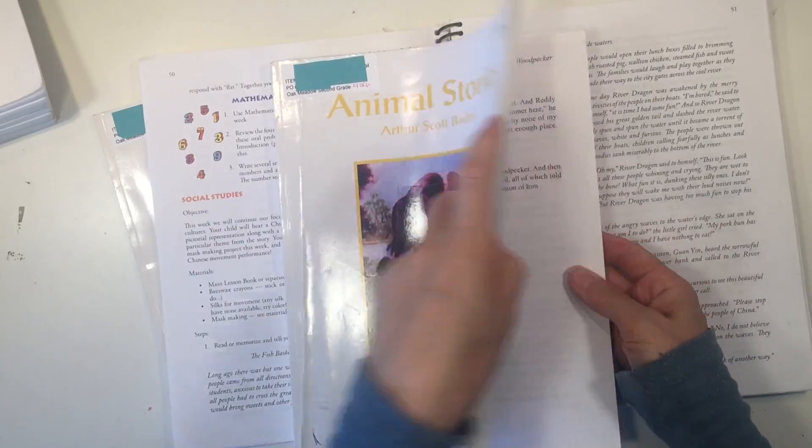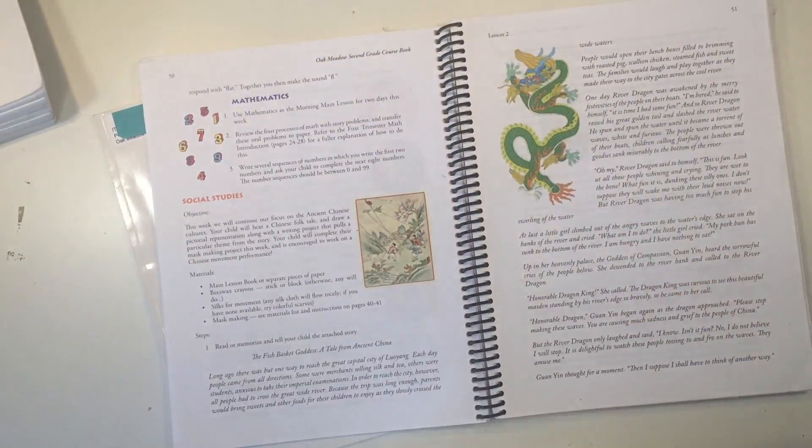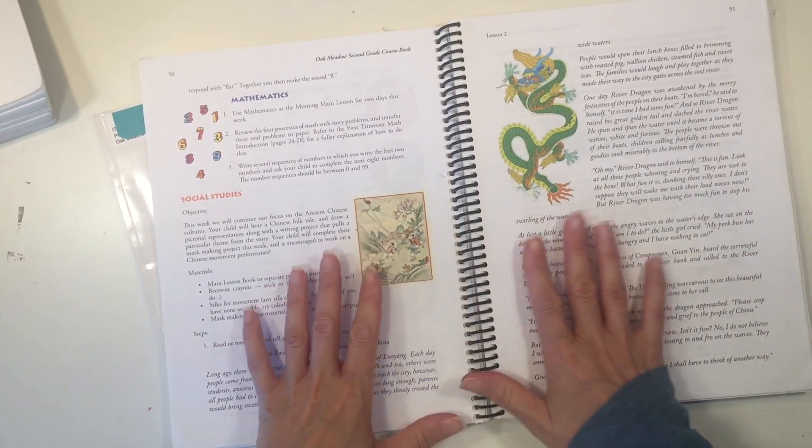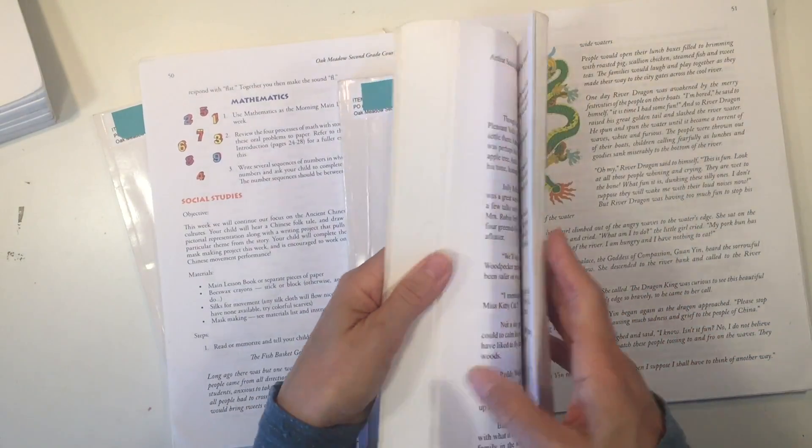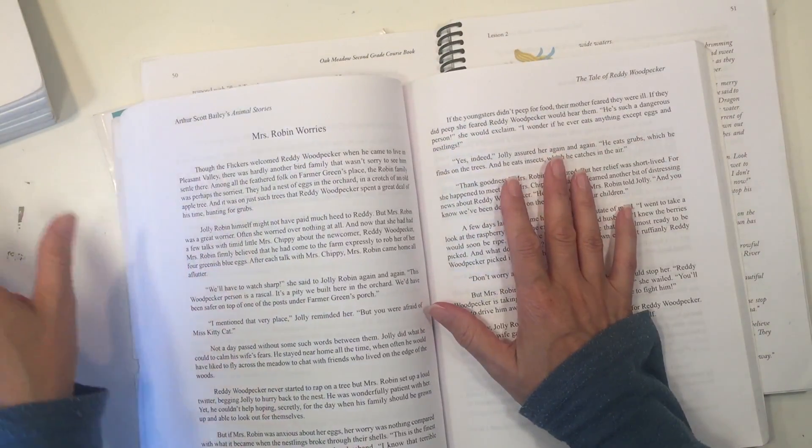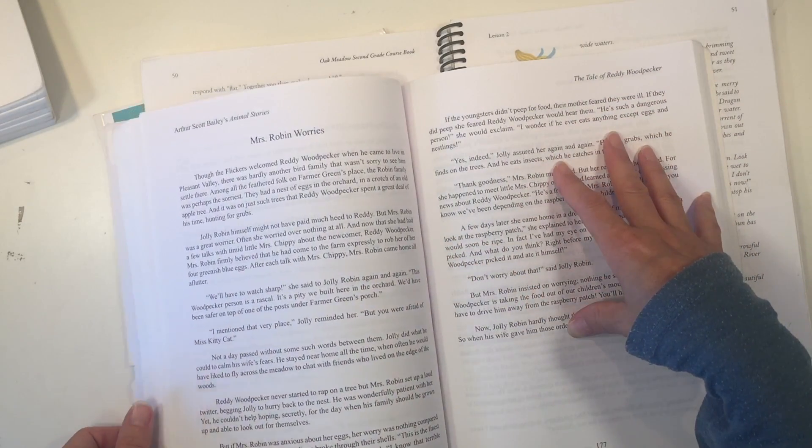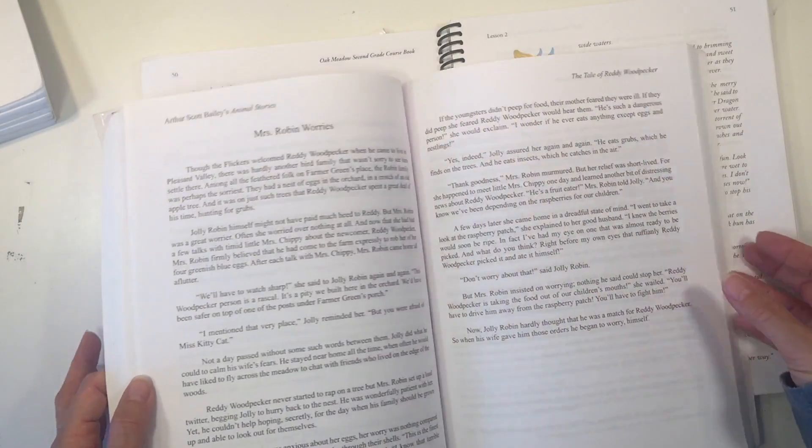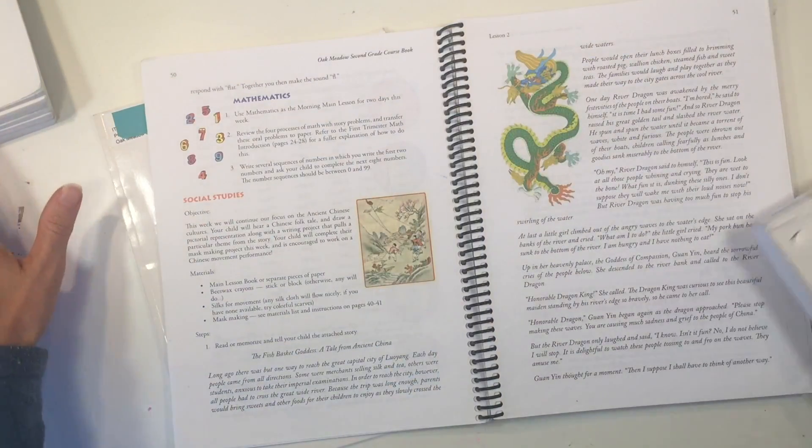What's nice is the variety of stories. You have your animal stories in here, which are really great to go through. But then you also have tales from other areas of the world. This one is an ancient tale from China. Something else about the curriculum that differs from the Live Education curriculum is that your font is quite a bit larger. There's a lot more space around it. It's not quite as dense as the Live Education curriculum.